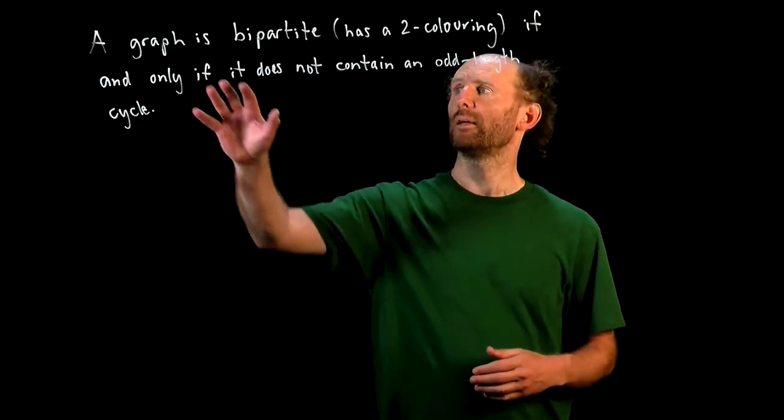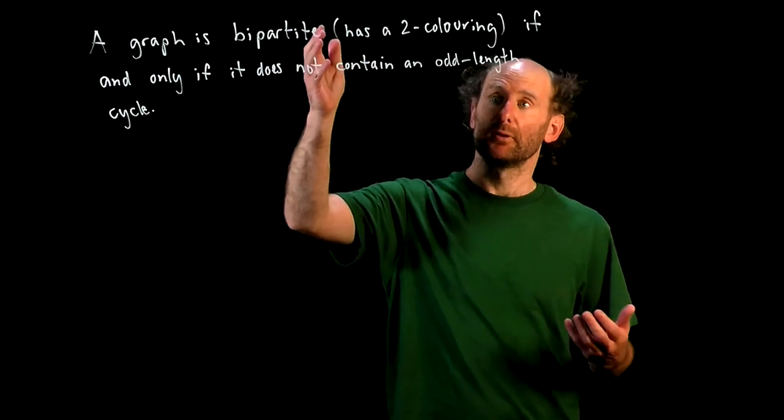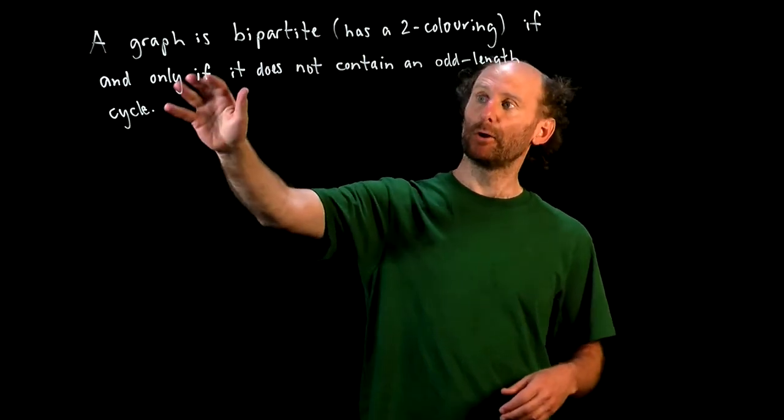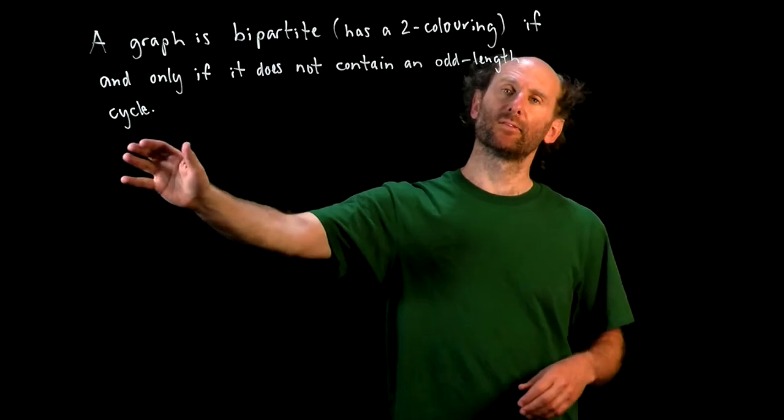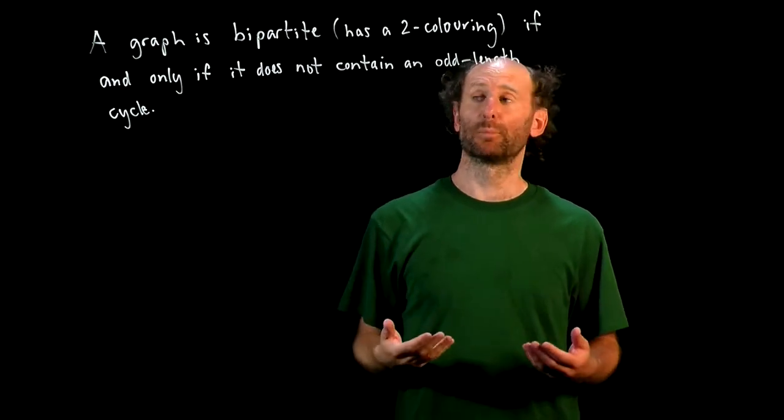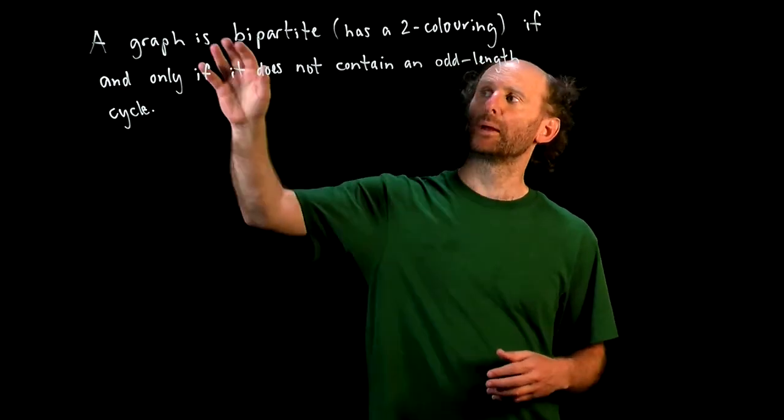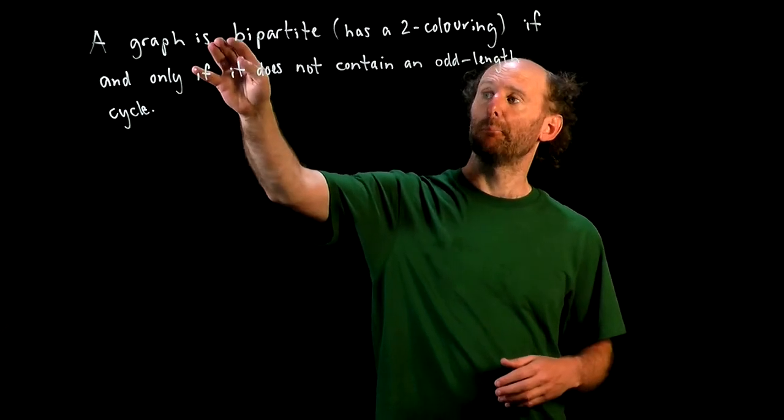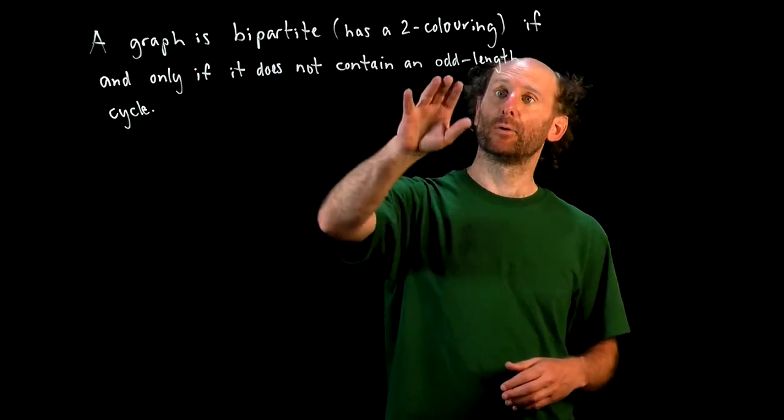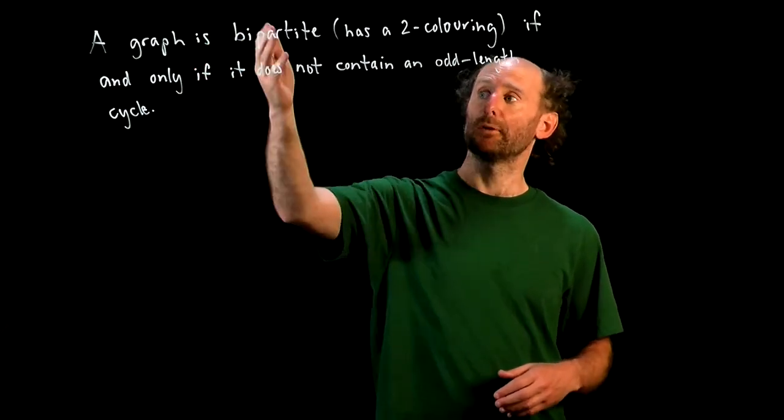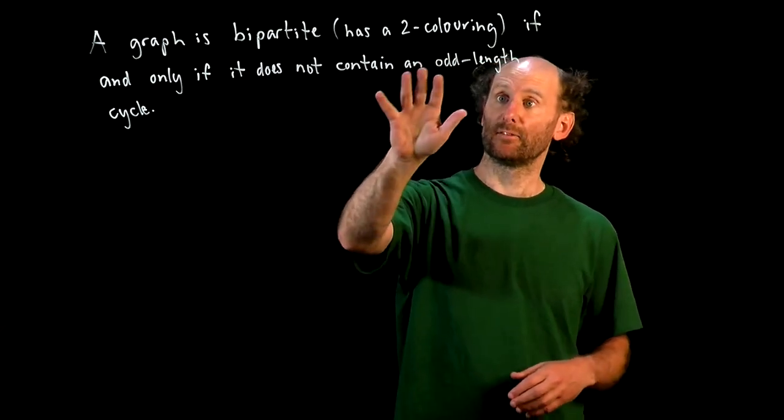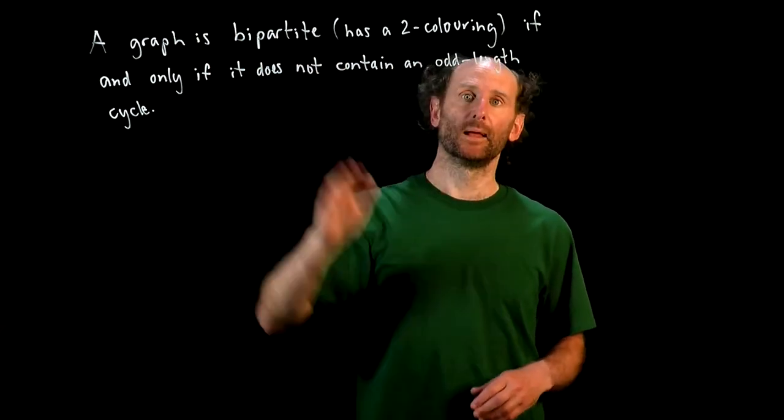Now, we can prove a simple result. So the result is that a graph is bipartite, so it has a two-coloring, if and only if it does not contain an odd-length cycle. Okay, so we're going to prove this first by assuming that if a graph is bipartite, then it has no odd-length cycle, and then we'll show the converse, that if it has no odd-length cycle, then it is bipartite.